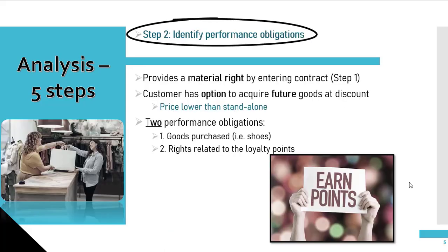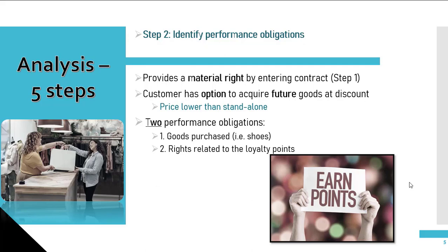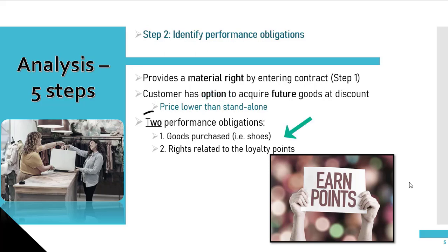Now let's review step two, which is identifying performance obligations. In this example, the option of converting loyalty points to a discount on a future purchase provides a material right to the customer that it would not receive without entering this contract. In other words, customers are not eligible to earn points or redeem them without purchasing shoes. This contract also gives the customer the option to acquire additional shoes at a price lower than the standalone selling price of the shoes in the future. Therefore, this transaction involves two performance obligations: the first being the goods purchased, which are shoes, and the second being the rights related to the loyalty points for a future date.